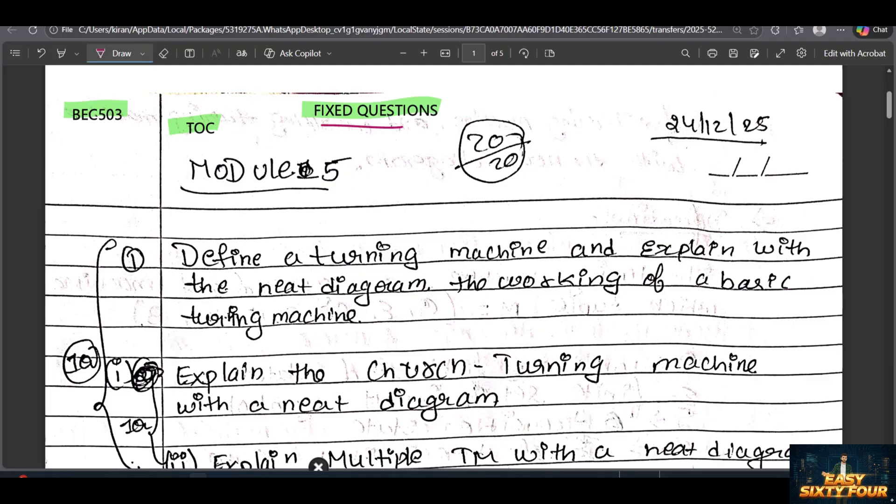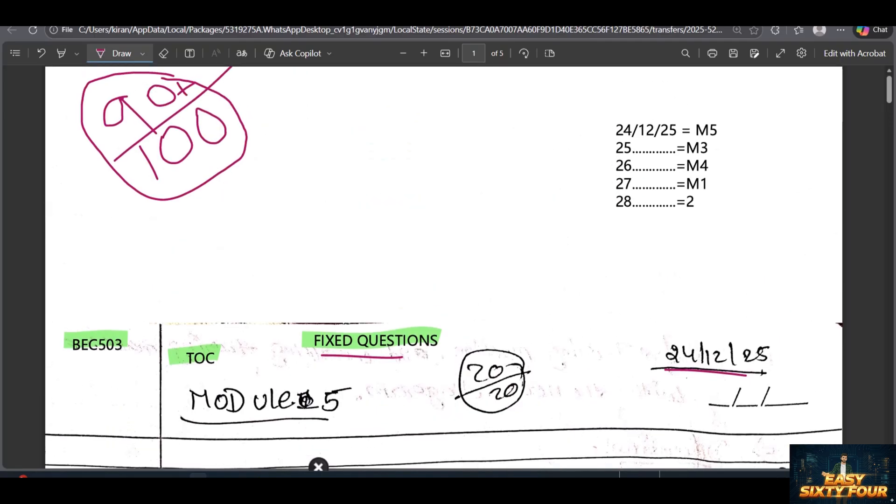What do you mean? Let's start today. We can complete one model per day, which means you can complete five models in five days. You can go and write the 29th exam.